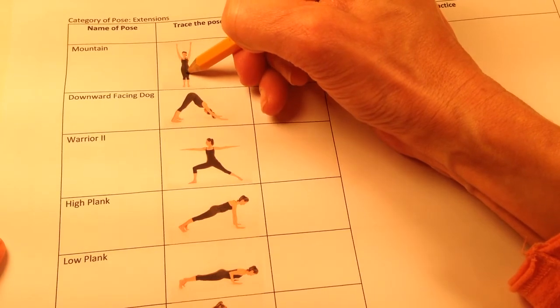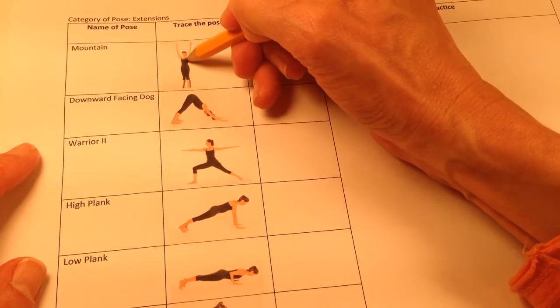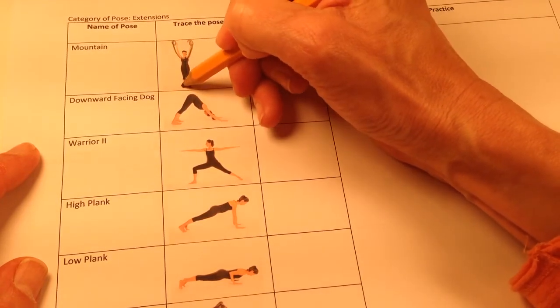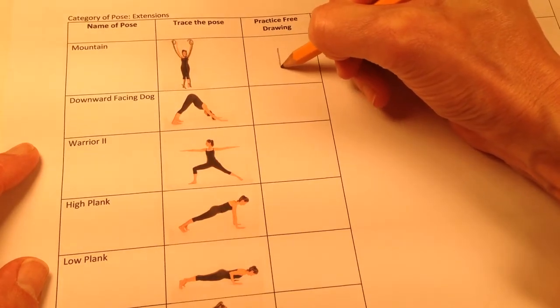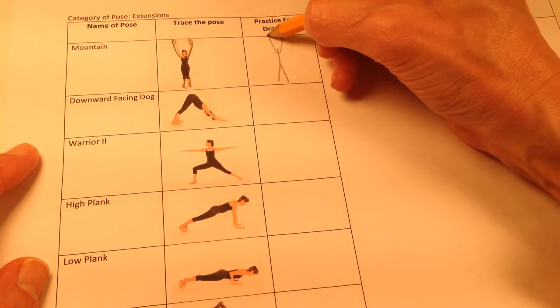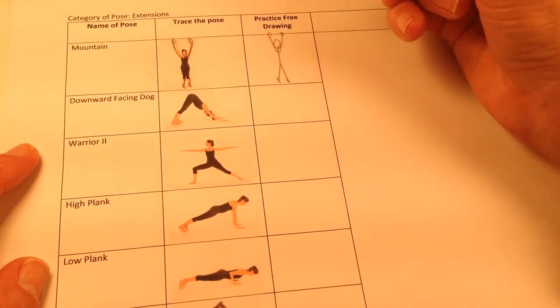Neck to pubic bone, torso. One line for each leg, one line for each arm. Hands, feet, and head. Torso, legs, arms, feet, head.